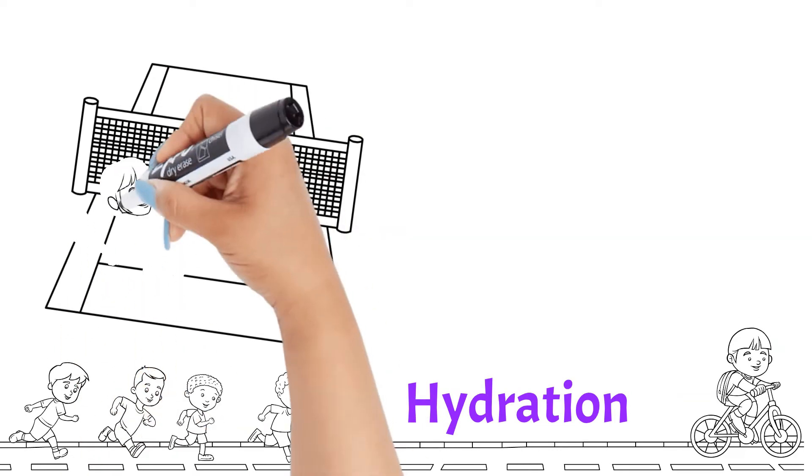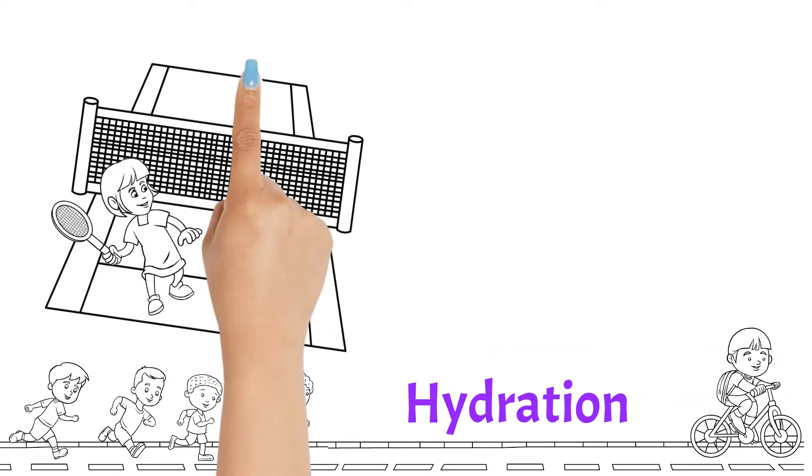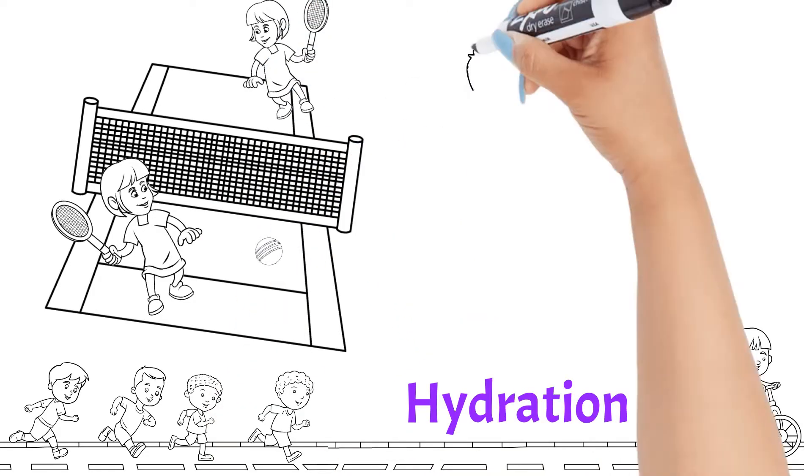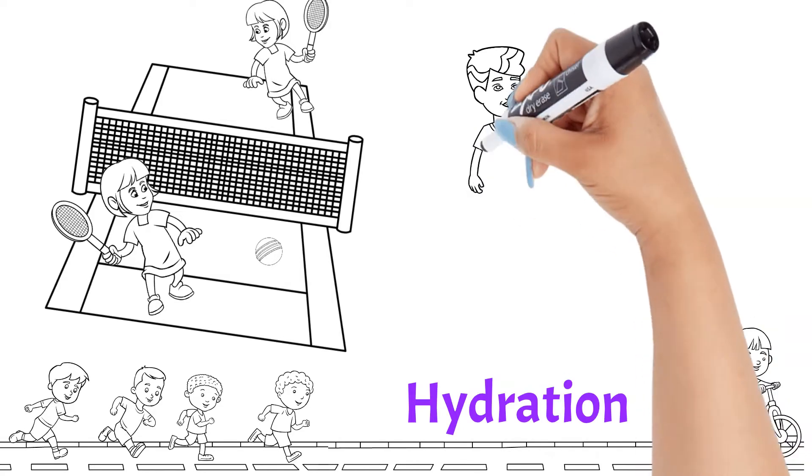To stay well hydrated, children ages four through eight should be drinking approximately five cups of either water or milk every day. Plain water remains the best way to fulfill hydration needs.